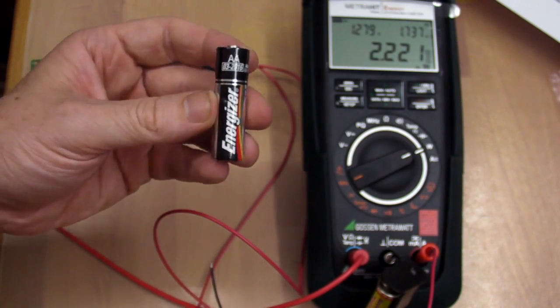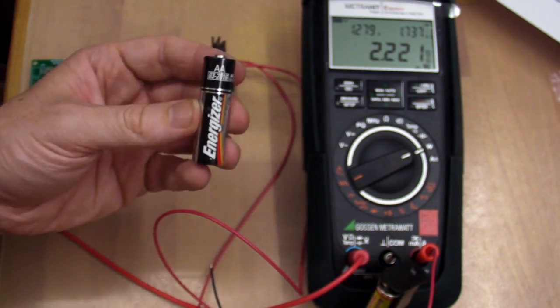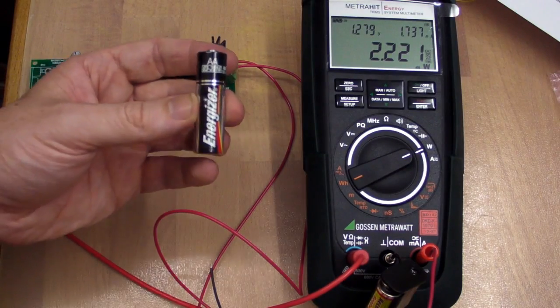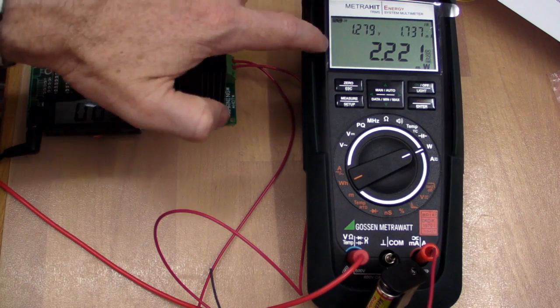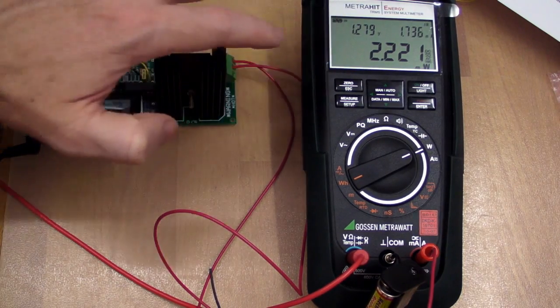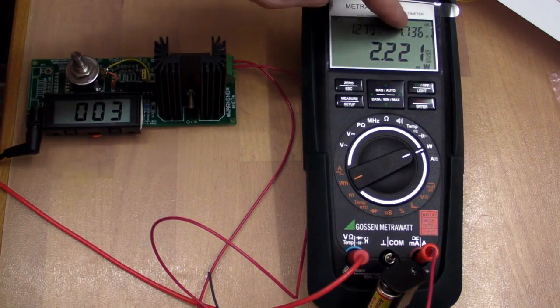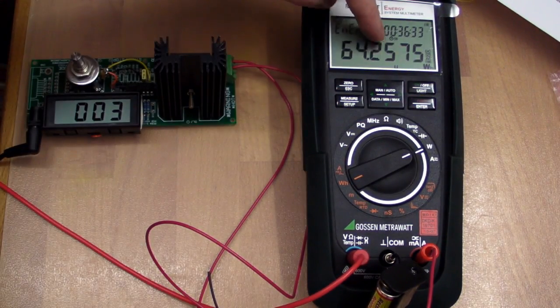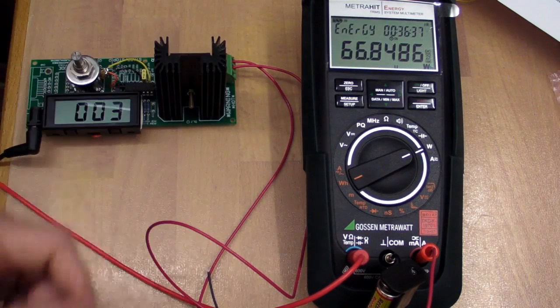So what actually is the true watt-hour capacity of a AA cell? Well, we can't get it from the data sheet, so let's measure it. It just so happens I've got this brand spanking new METROHIT energy multimeter here which actually allows me to measure not only voltage and current at the same time, but it allows me to actually measure capacity in watt-hours as well. Fantastic!